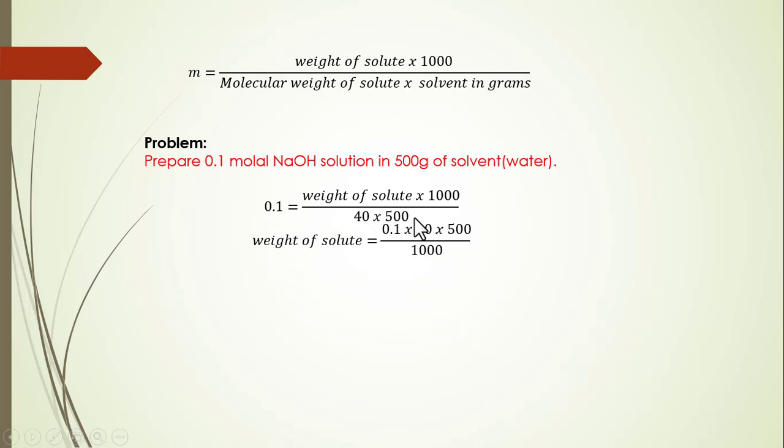This 500 into 40 into 0.1 would be divided by 1000, and this would give us the weight of solute, which is 2 grams. So now we have calculated the weight of sodium hydroxide that needs to be put into 500 grams of water to prepare 0.1 molal solution.